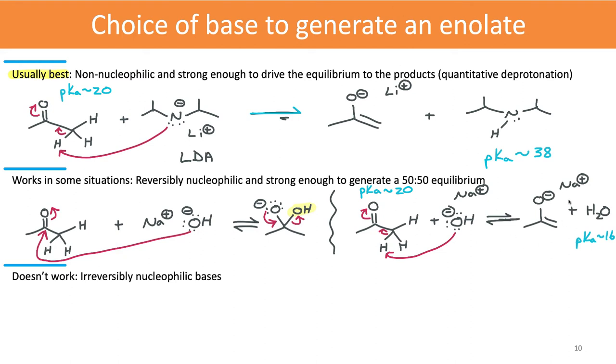So this is a kind of situation, that kind of base that can work. Certainly some of the enolate will be generated, but it's only going to work in situations where there's an electrophile that's already present and that's already reactive enough. It might be a situation where in fact the electrophile is already on the molecule.